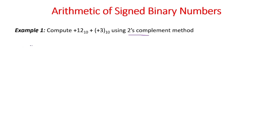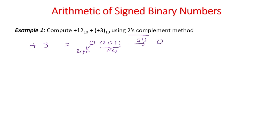Let me take one example of plus 3. In 4-bit, the magnitude of 3 is 0011, and plus is indicated by 0 in the most significant bit. This is the sign bit and this is the magnitude. This is called signed magnitude representation of plus 3, and the two's complement representation is also similar.